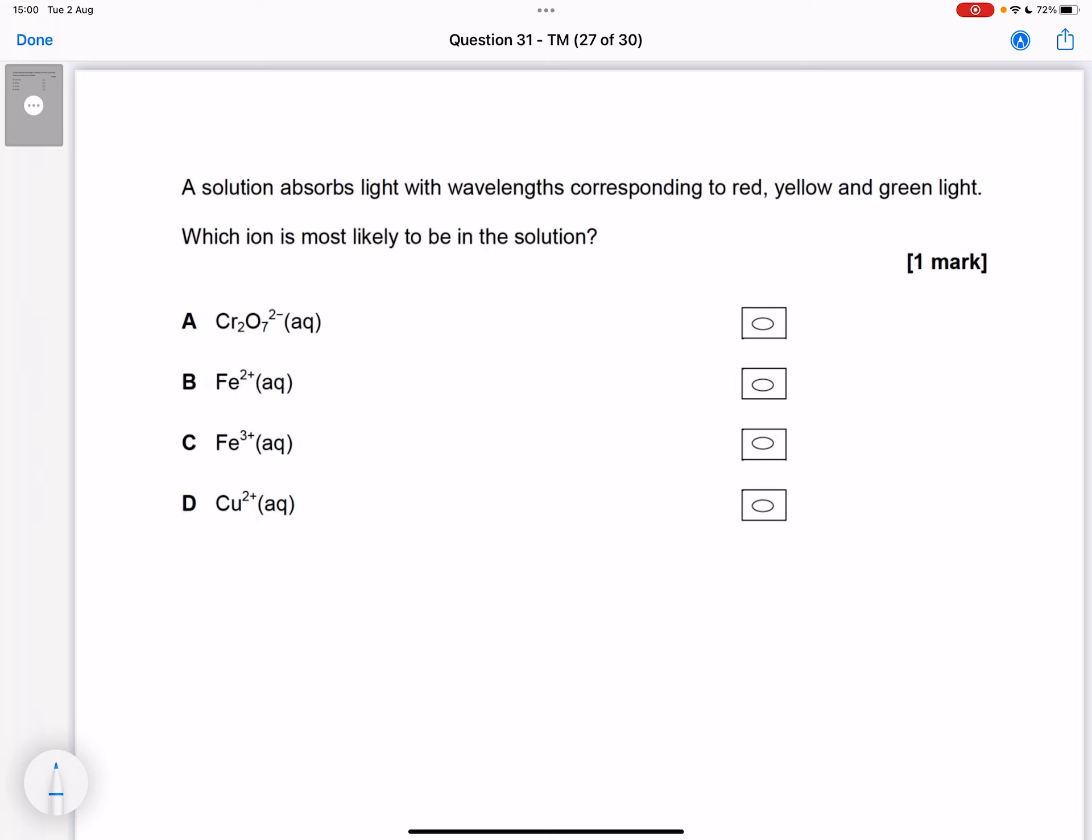If we mix together yellow and green, we'll get like a lighter green. Red and green, it's not a great color. So none of these colors will be the color of our solution.